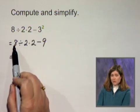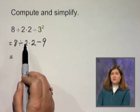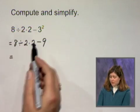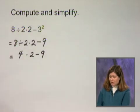The first division or multiplication we see is this division sign here, 8 divided by 2. So that's the first operation we do, 8 divided by 2 is 4, then I'm going to copy the rest of the problem.